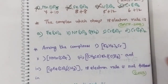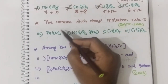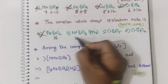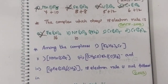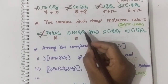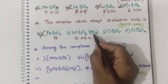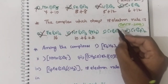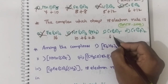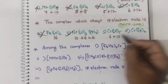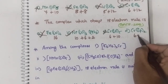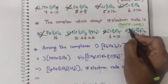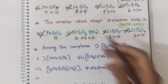Fourth question: which complex obeys the 18 electron rule? Fe(CO)4 we already know gives 16 electrons. For Ni(CO)3(PPh3): nickel has 10 electrons (3d8, 4s2); 3 carbonyls donate 6 electrons; PPh3 donates 2. Total: 10 + 6 + 2 = 18. This is the correct option. Cr(CO)5 gives only 16, and Cr(Cp)2 also gives 16. Hence option B, Ni(CO)3(PPh3), is the correct answer.